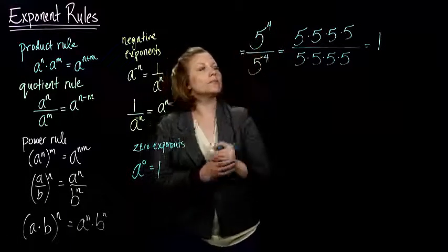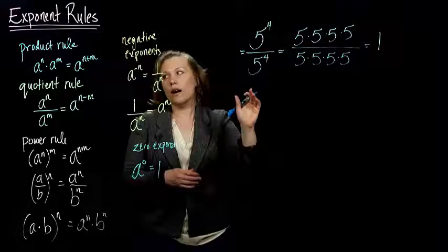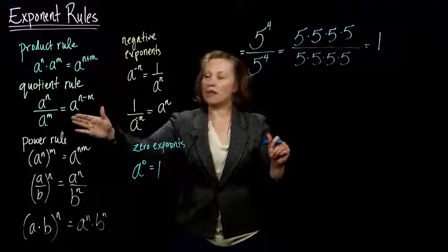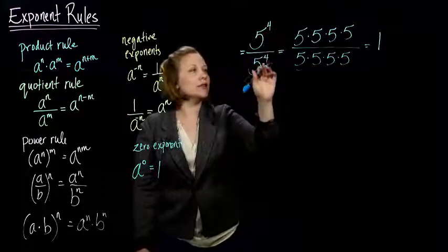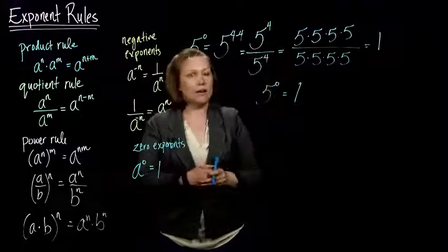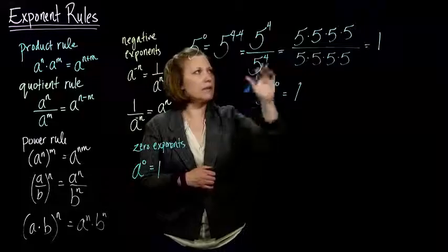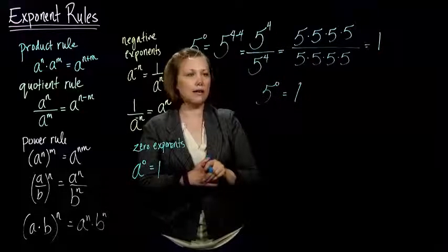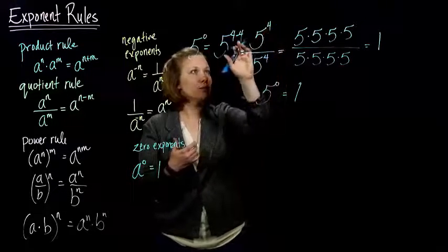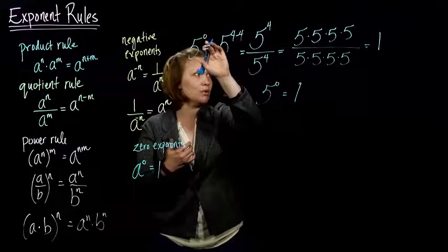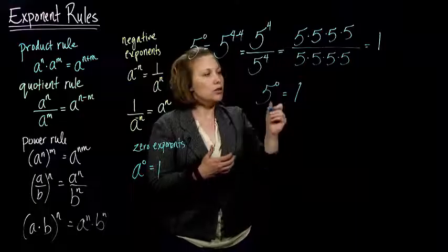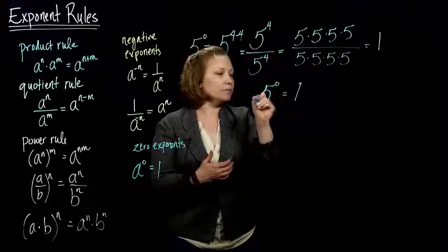Could have skipped a little step there. Or, again, going back to this quotient rule. The quotient rule says I take 5 and take 4 minus 4, but 4 minus 4 is 0. So 5 to the 0 power, using that property of equality, right? If I've got a whole string of things equal to each other, the things on the end have to be equal to each other for that to be true. So 5 to the 0 ends up being 1.